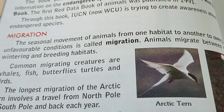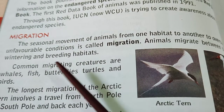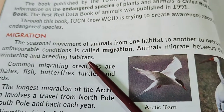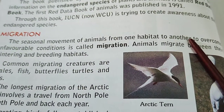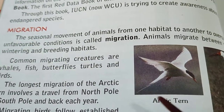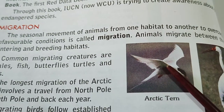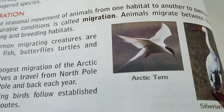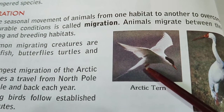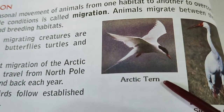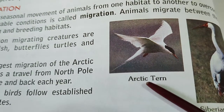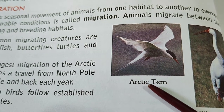Our next topic is migration. We can define migration as the seasonal movement of animals from one habitat to another habitat to overcome unfavorable conditions. Examples include the Arctic tern and the Siberian crane. Just imagine their original habitat — severe cold and freezing conditions in Siberia and in the Arctic zone.